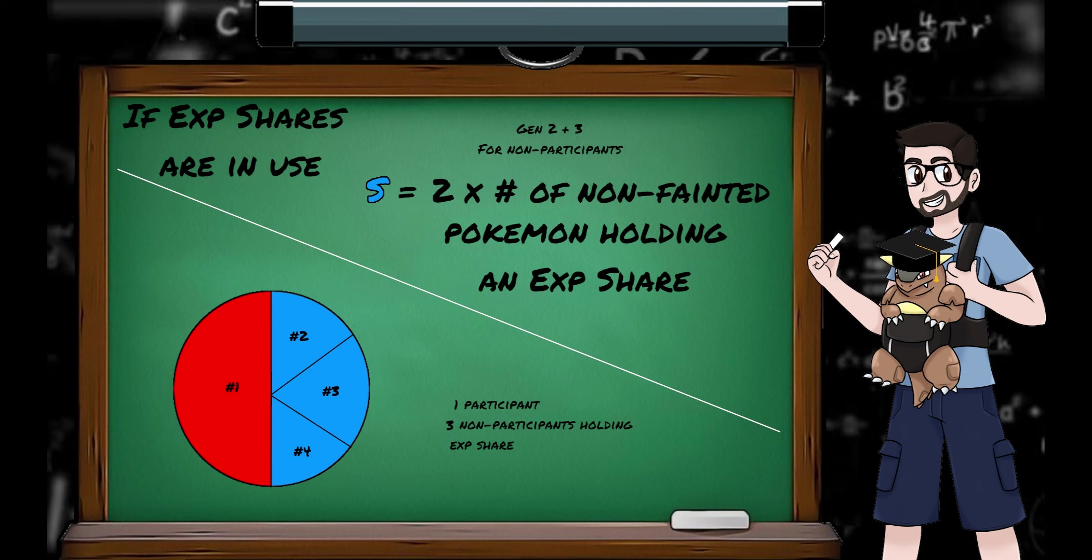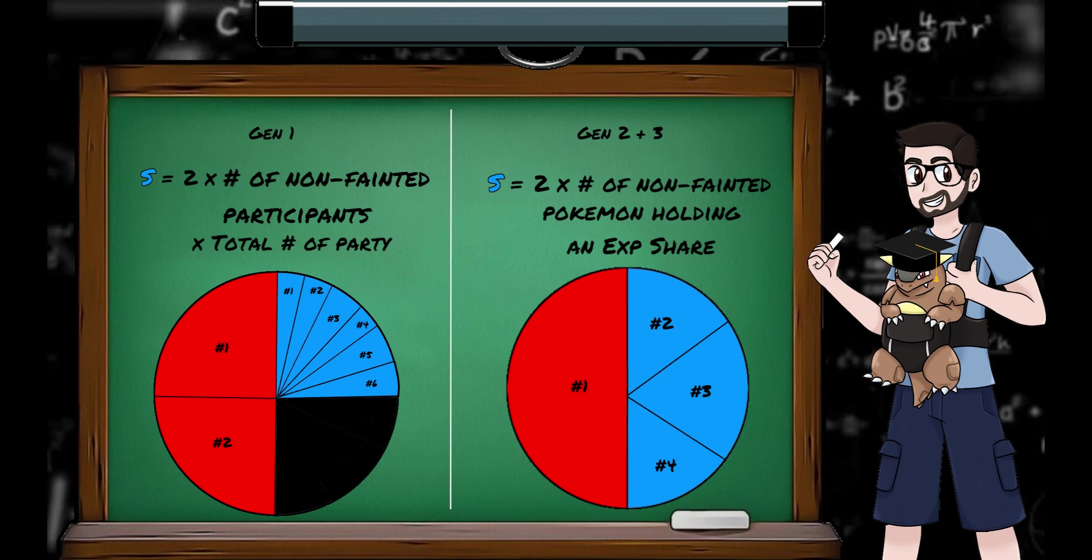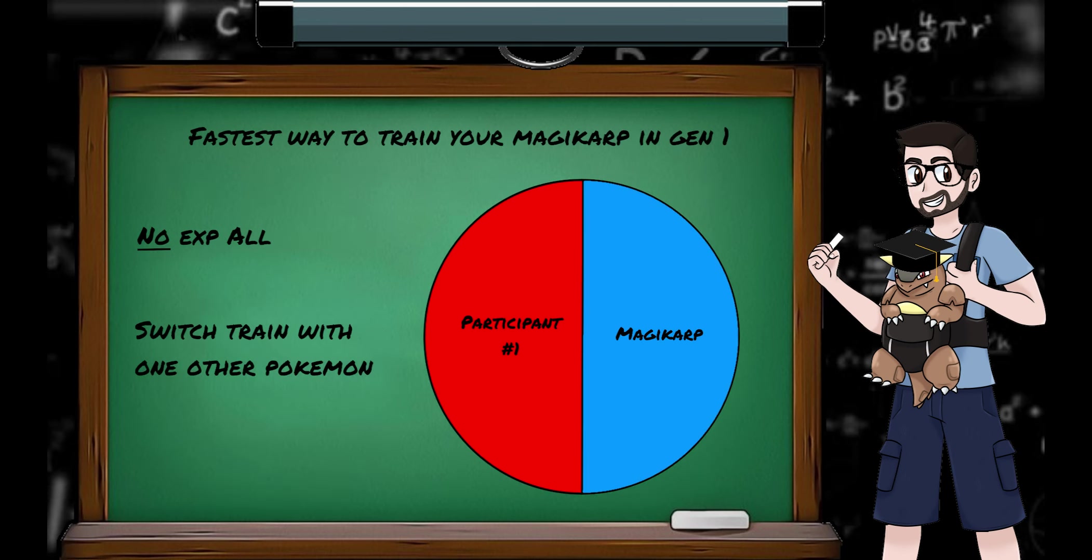I don't know about you, but generations 2 and 3 make a lot more sense than generation 1 for this one. And so the fastest way to train your Magikarp in generation 1 would be to throw the XP all in the PC and just switch train with one other Pokemon, giving Magikarp half of the experience every battle.